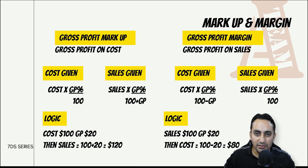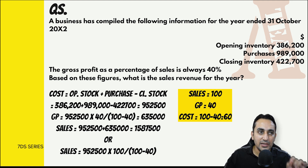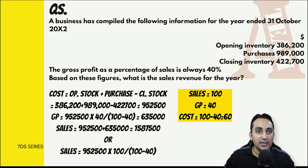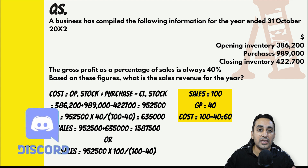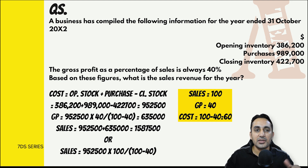इसे apply करके देखते हैं। एक business की information दी है - opening stock, purchases, closing inventory। Gross profit as a percentage of sales दे रखा है यानी margin की information है। Margin में sales को 100 मानेंगे, gross profit 40% है तो $40। Cost का equivalent amount = 100 - 40 = 60 निकल जाएगा।